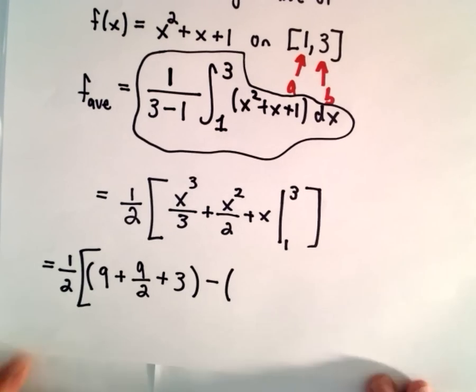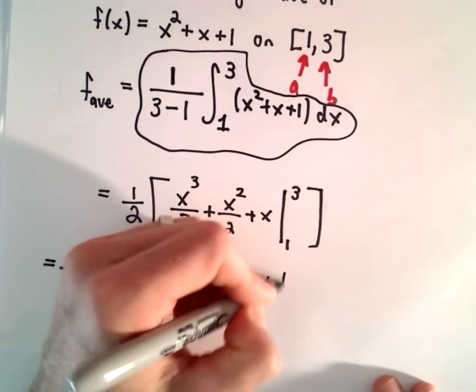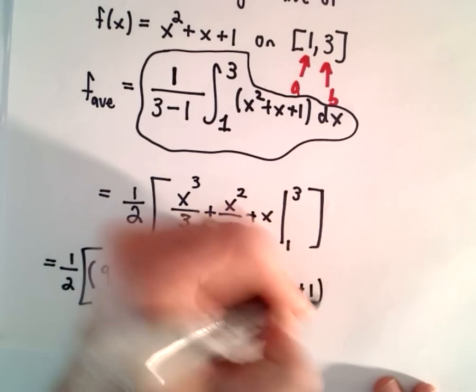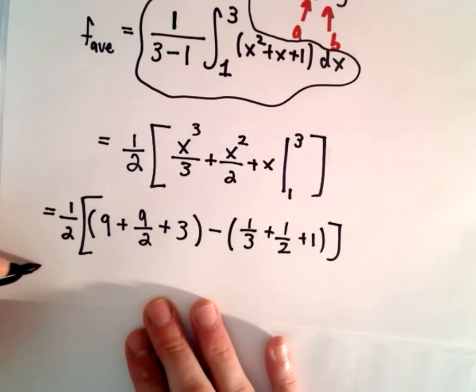Minus, let's just substitute in the lower limit. So if we plug in 1, we'll just have 1 third plus 1 half plus 1. And now it's just a matter of simplification.